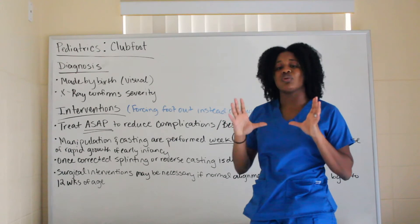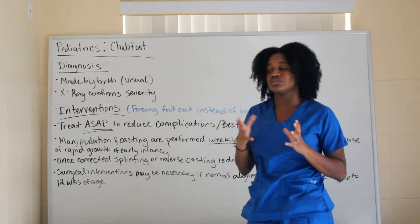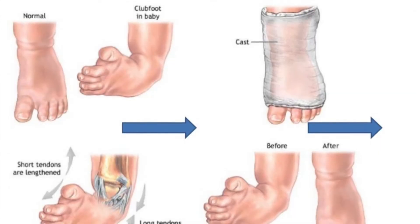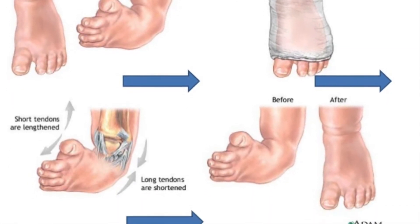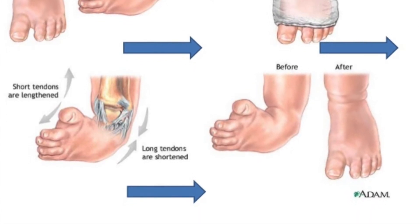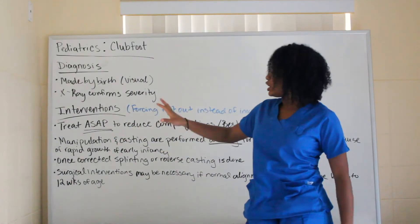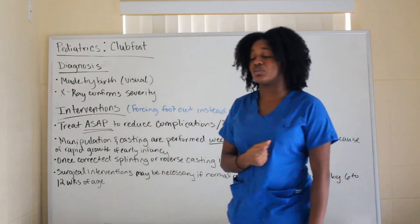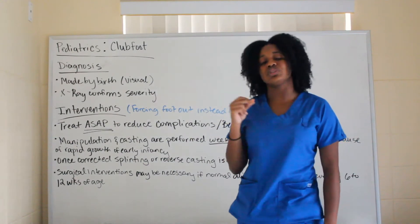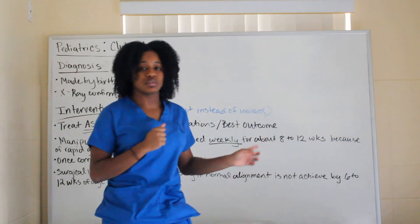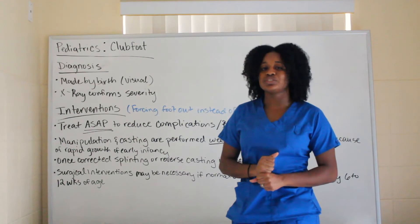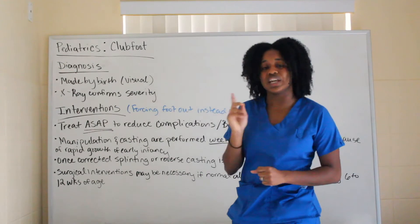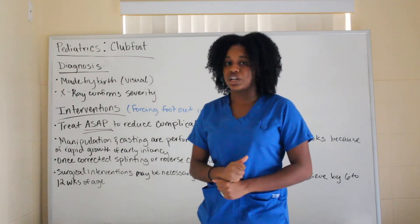For intervention, the goal is forcing the foot outward since the feet are positioned inward, so the child can walk on the soles of their feet. You treat as soon as possible — ASAP — to reduce complications and achieve the best outcome. When should intervention start? As soon as possible.